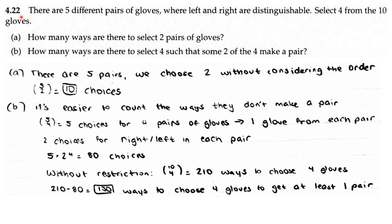AOPs Counting and Probability 4.22. There are 5 different pairs of gloves where left and right are distinguishable. Select 4 from the 10 gloves. Part A: How many ways are there to select 2 pairs of gloves? Part B: How many ways are there to select 4 such that some 2 of the 4 make a pair?